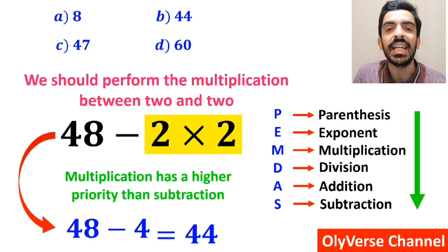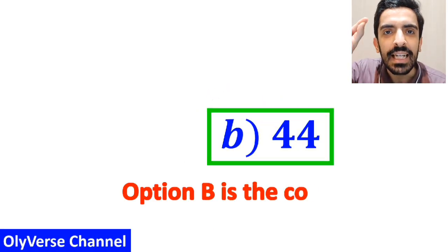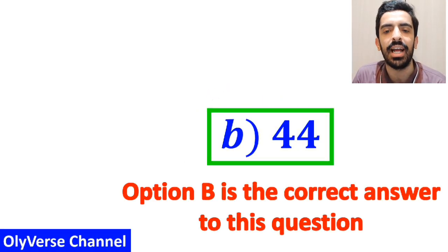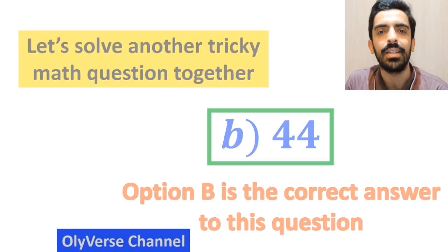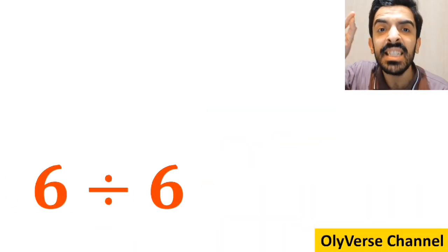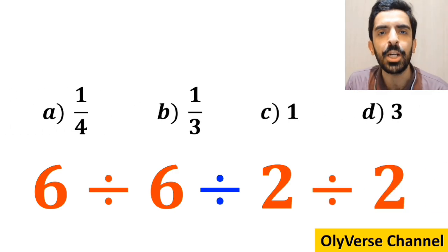And finally, we get the answer 44. Therefore, option B is the correct answer to this question. Okay, let's solve another tricky math question together. What is the value of the expression 6 divided by 6, again divided by 2, divided by 2? Which option do you think is the correct answer to this question?